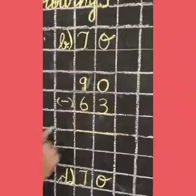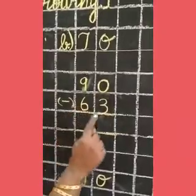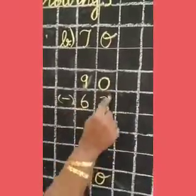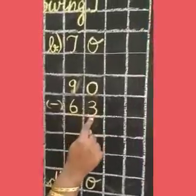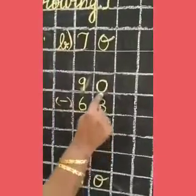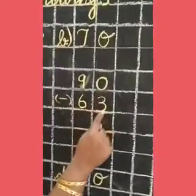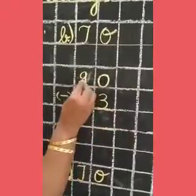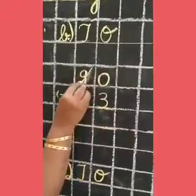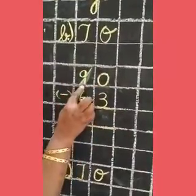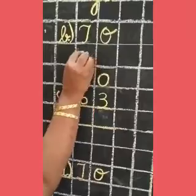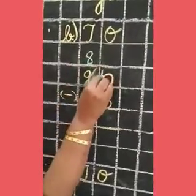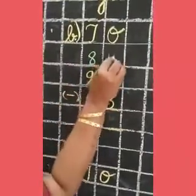Next sum: 90 minus 63. Now we are going to subtract the ones place. 0 minus 3 — 0 is smaller than 3, so we have to borrow from the tens place. Before 9 comes 8. Now we have to give one ten to the ones place. So what is this? 10.